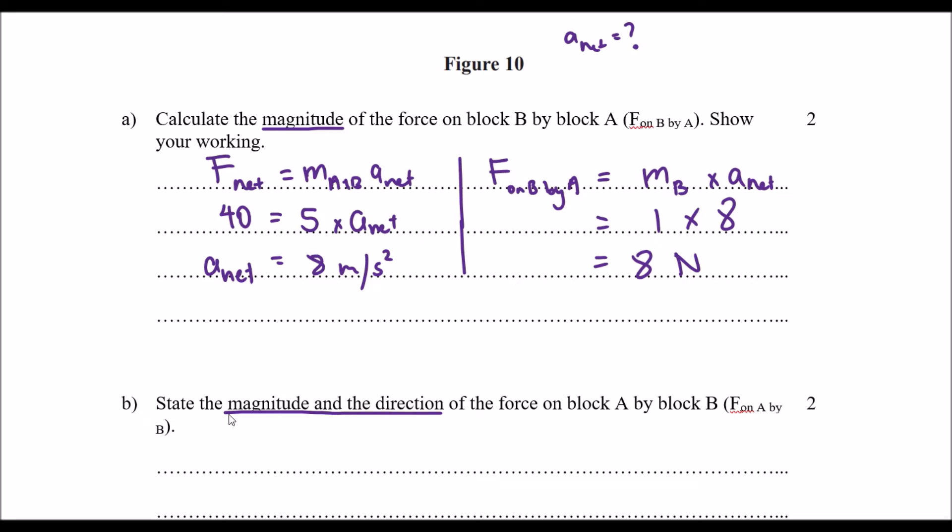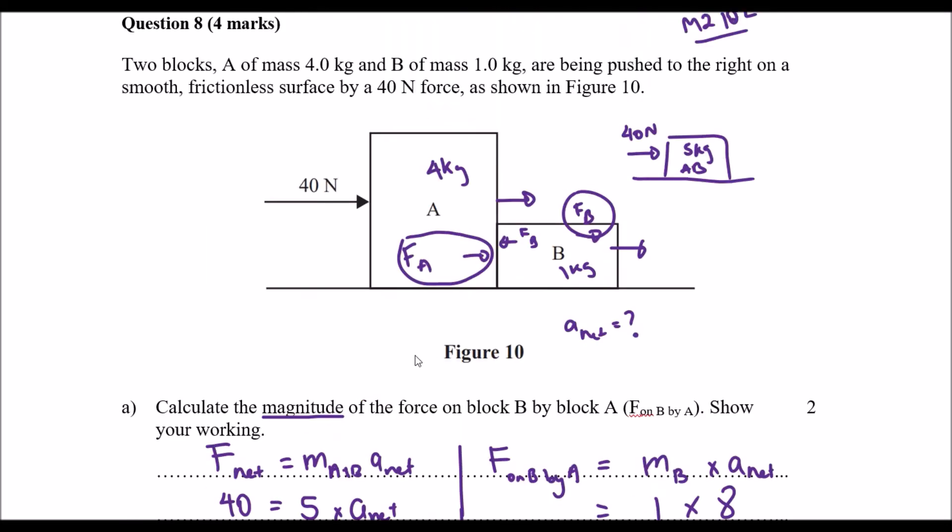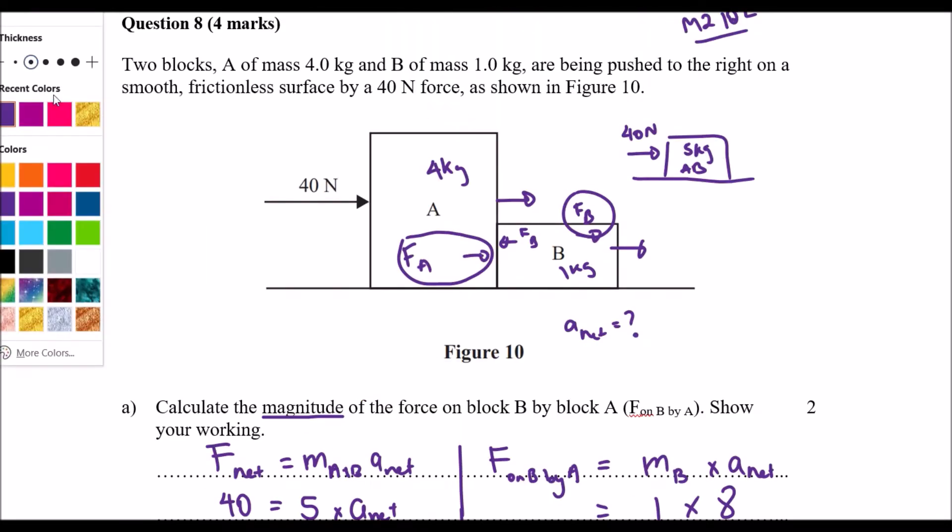Okay, so in this one, obviously the one difference is one says calculate, one says state. What that probably implies to you already is we probably already know the magnitude. In this case it's actually 8 newtons, and the direction obviously we need to explain. Let's use the chart up here to do that explanation. I'll use a different color as well.